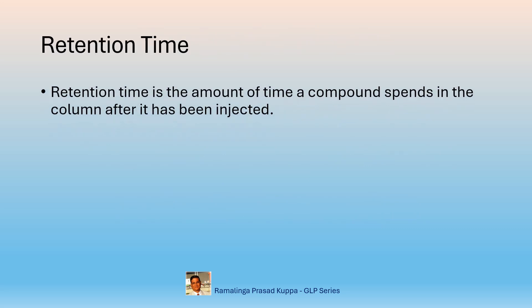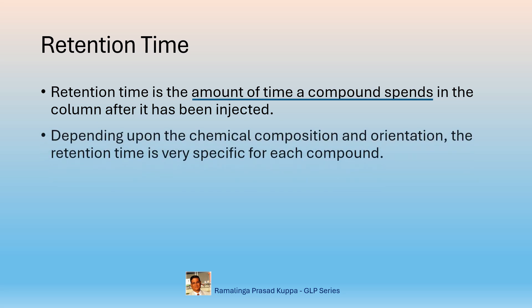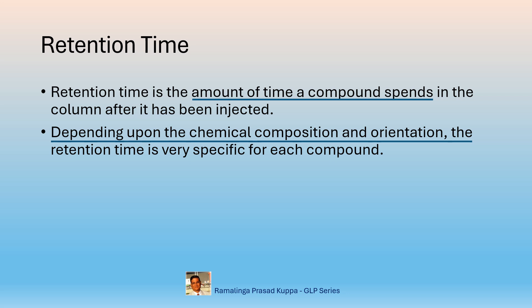Retention time is the amount of time a compound spends in the column after it has been injected. This is measured as the time in minutes from injection point to the apex of the peak of the compound. Apex means when the peak starts eluting from the baseline, the peak area counts increase to a maximum extent where it reaches the apex point, and slowly descends back to the baseline. The time taken from the injection point to this apex point is considered as retention time. Depending upon the chemical composition and orientation, the retention time is very specific for each compound. This specific characteristic is utilized greatly for identifying the compound.